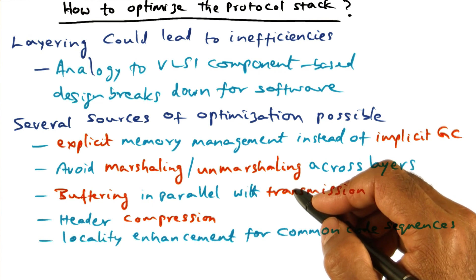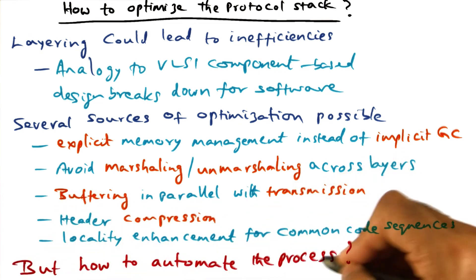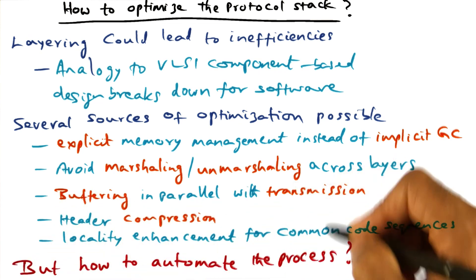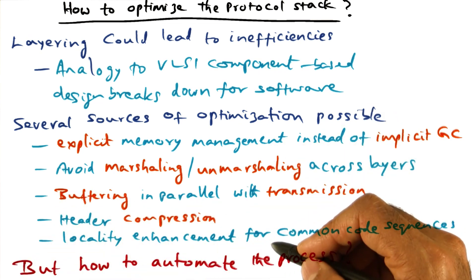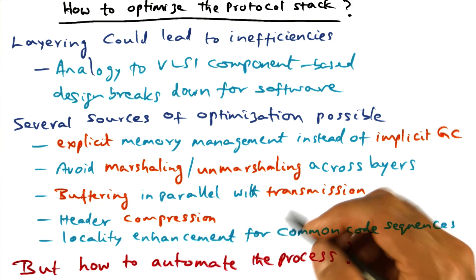There are lots of opportunities for optimization. But doing it by hand manually is tedious. So how do we automate the process of optimization so that we don't have to do it manually?